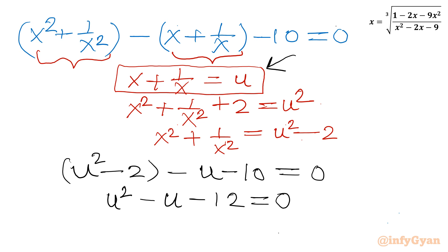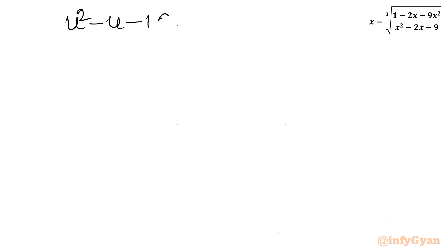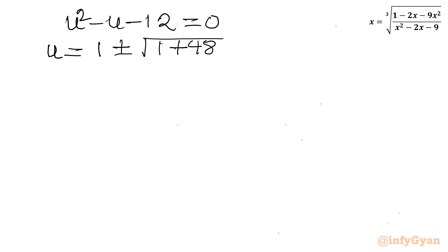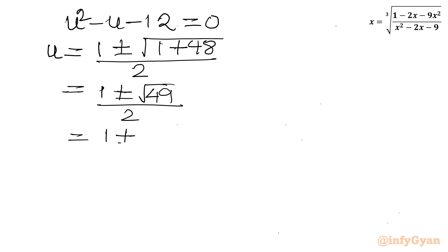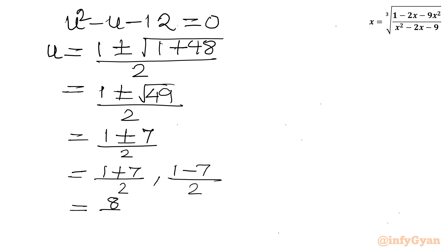Remember u = x + 1/x. Let us solve u² minus u minus 12 = 0 using the quadratic formula: u = (1 plus or minus √(1 + 48)) / 2 = (1 plus or minus √49) / 2 = (1 plus or minus 7) / 2. So u = 4 or u = minus 3.